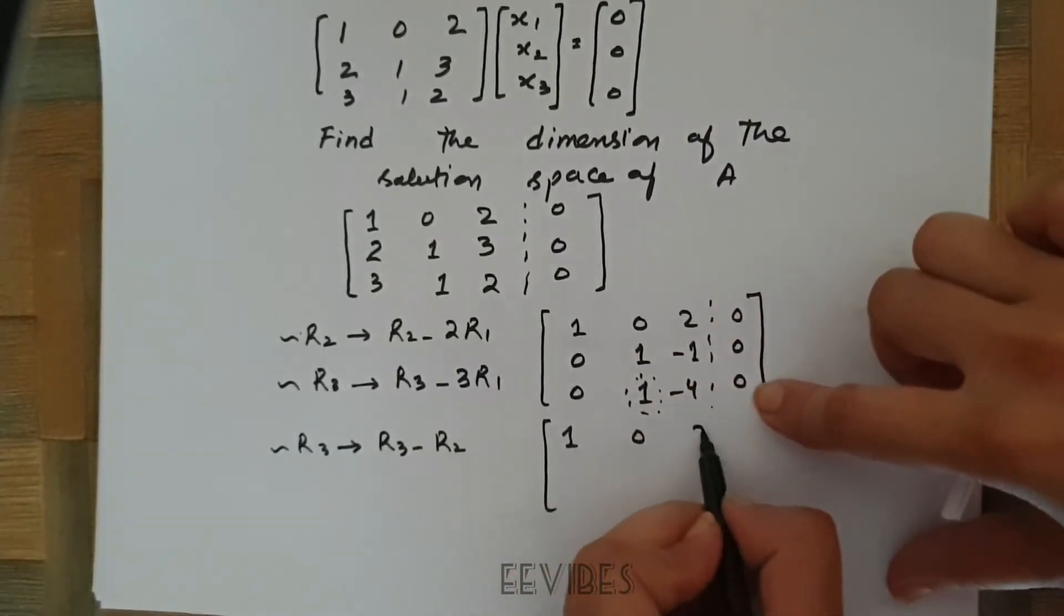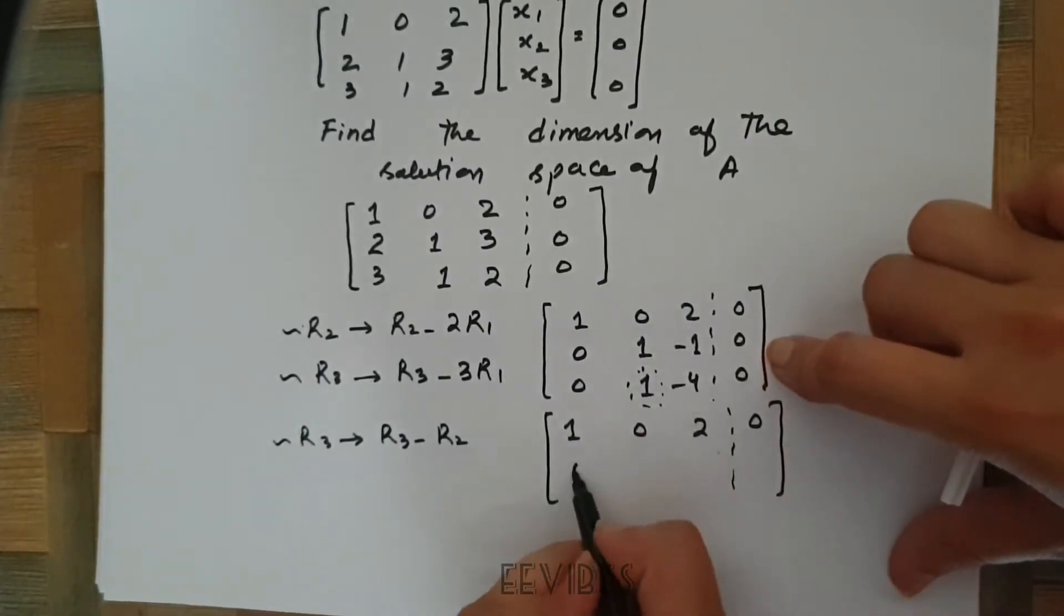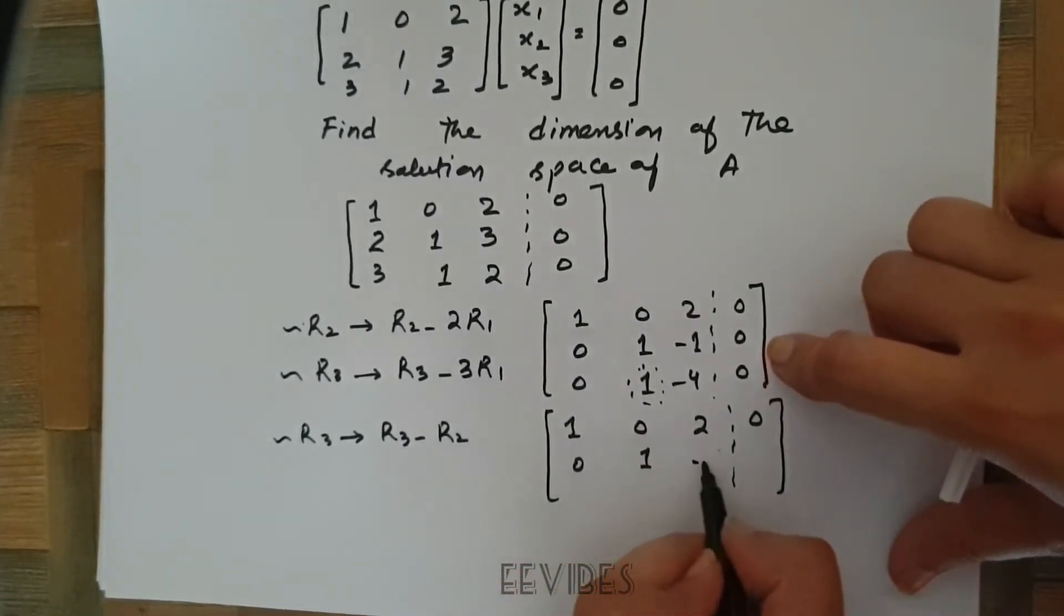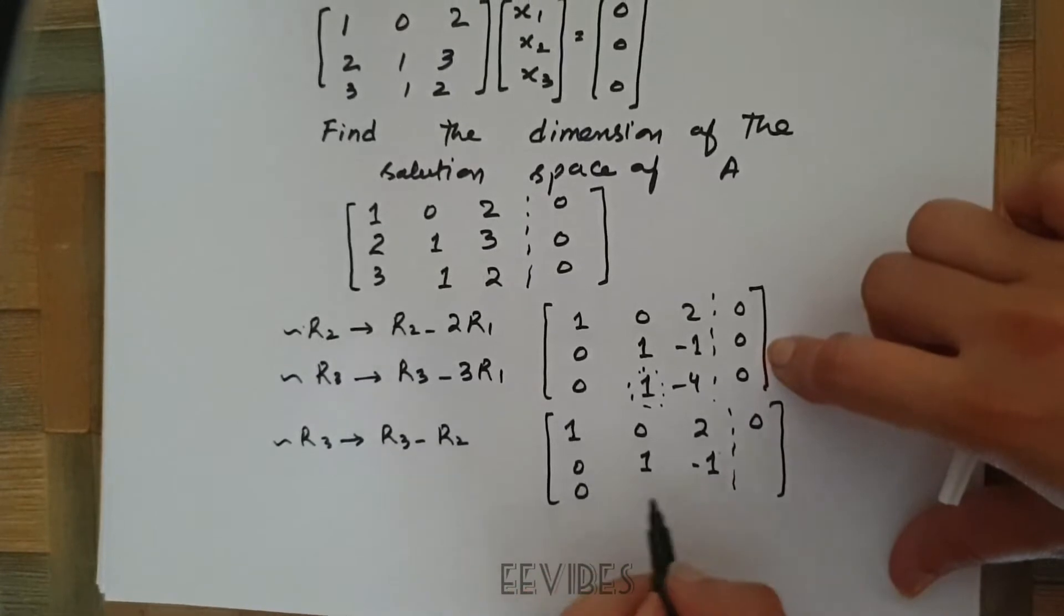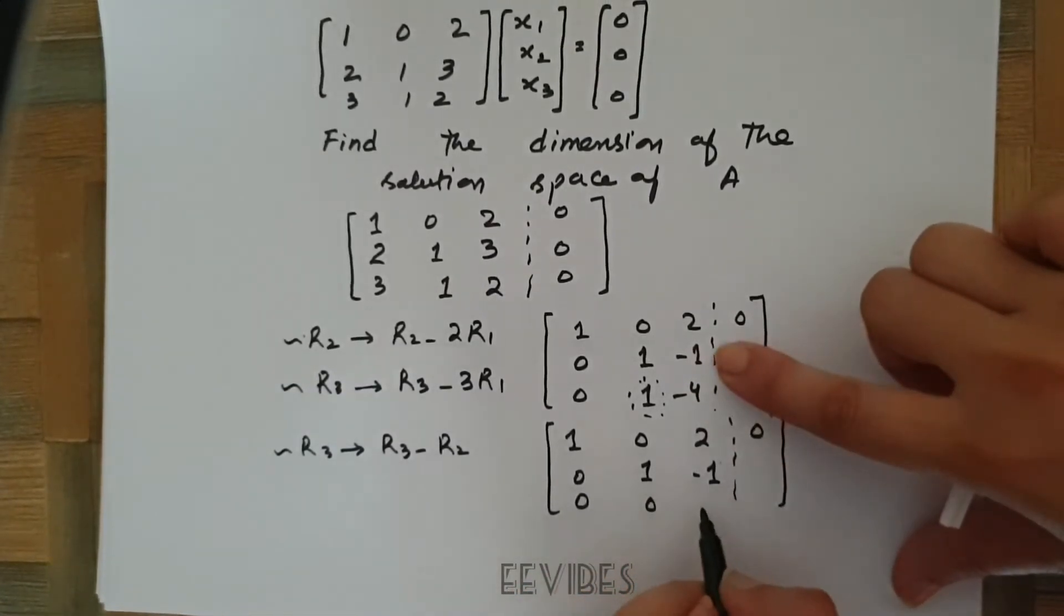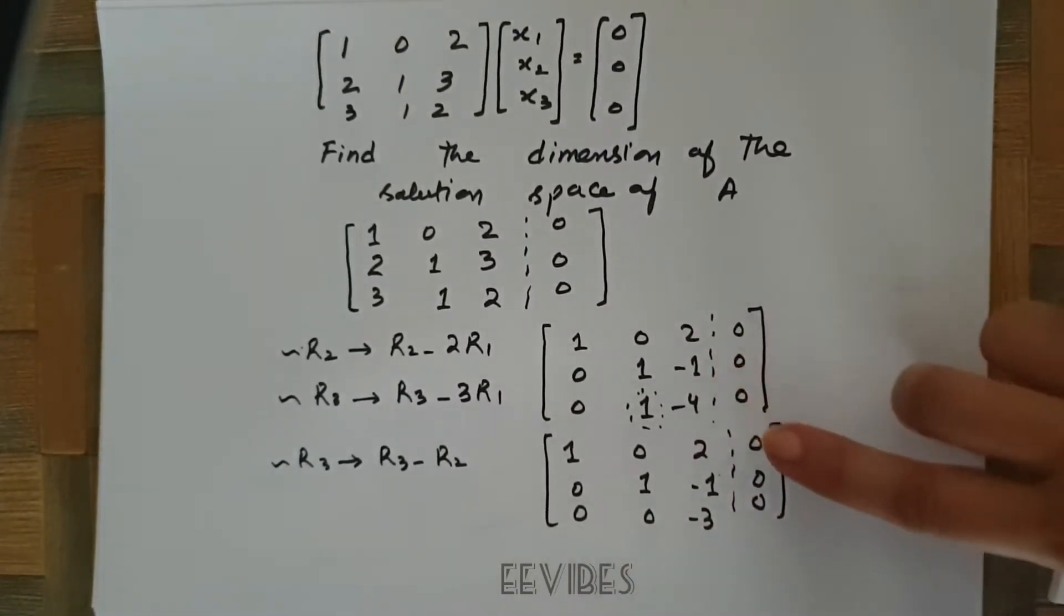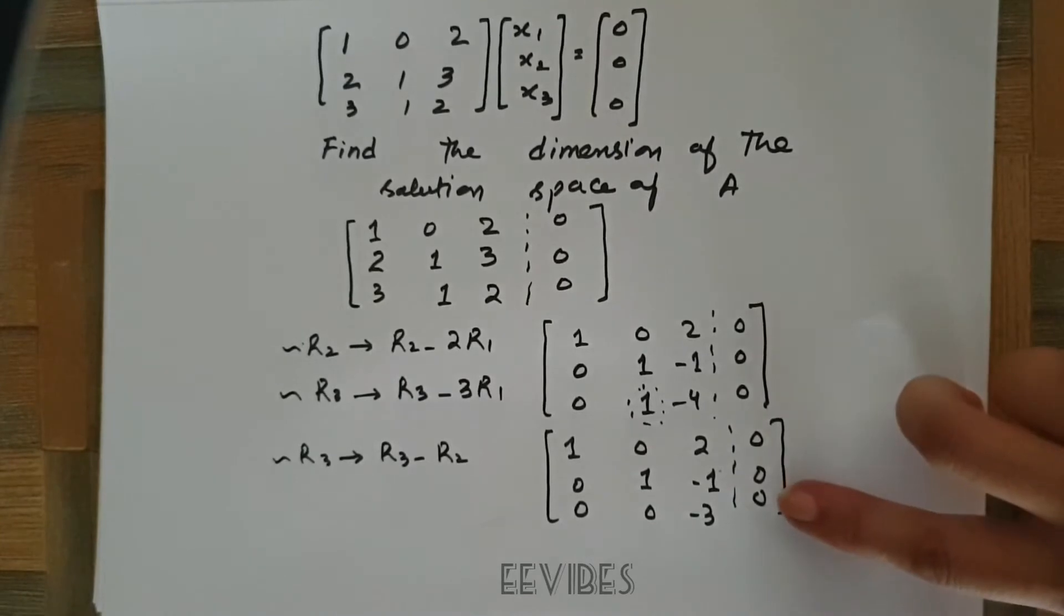So you will have 1 0 2 here, 0 1 minus 1, then 0, and then 0 minus 4 plus 1 minus 3, and here you will get this entry equal to 0.